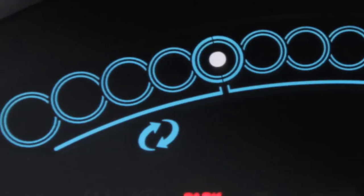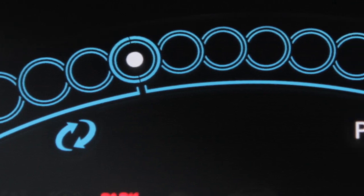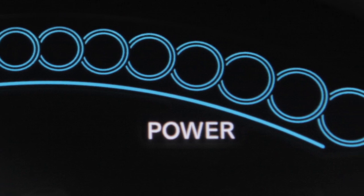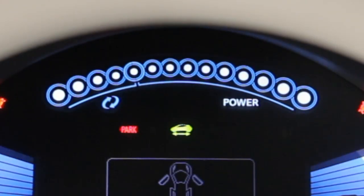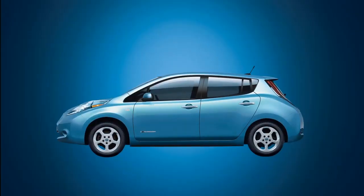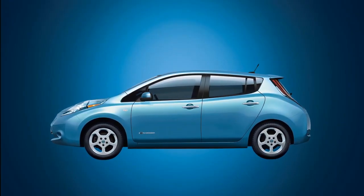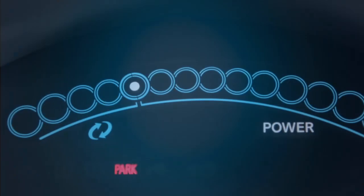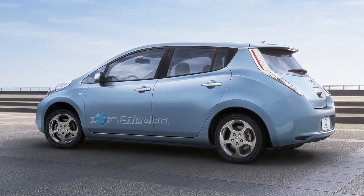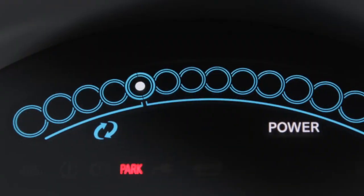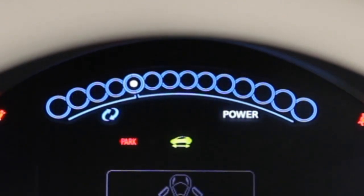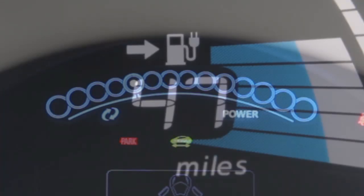This power meter displays the traction motor power consumption and the regenerative brake power supply to the lithium-ion battery. The dots will increase or decrease depending on driving conditions. When the battery is charged with the power produced by the regenerative brake system, the central dot moves to the left. When the battery discharges and power is supplied to the motor, the central dot moves to the right. Please consult your owner's manual for more information on this feature.